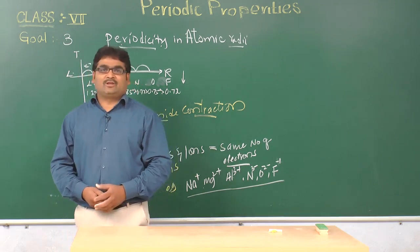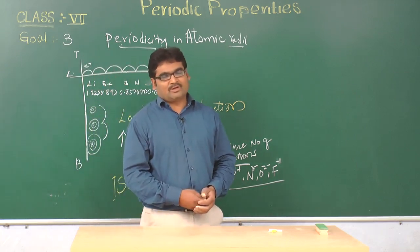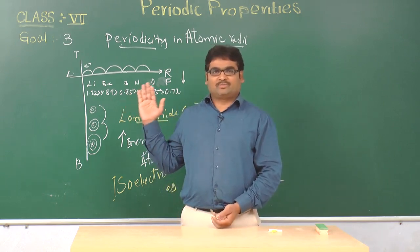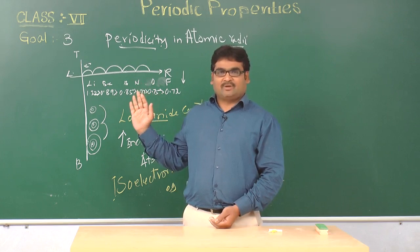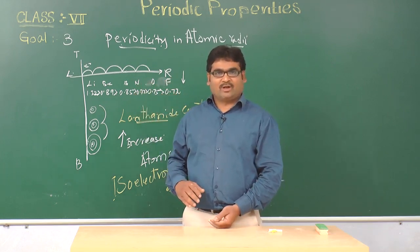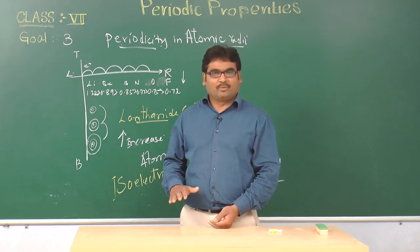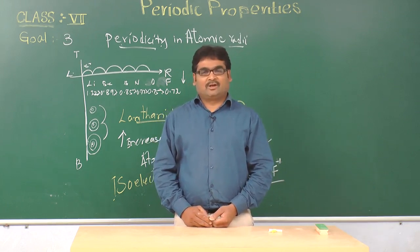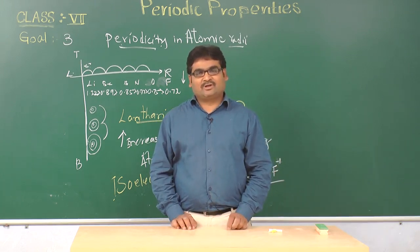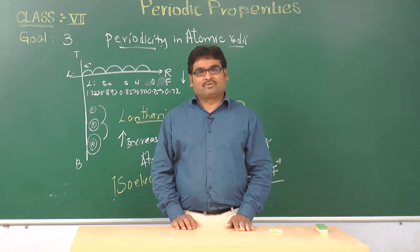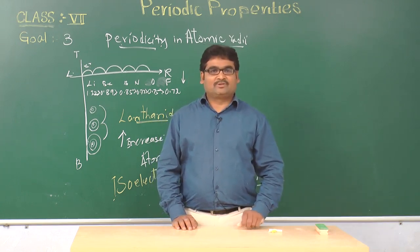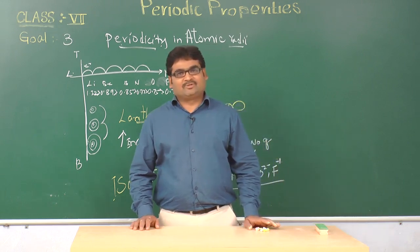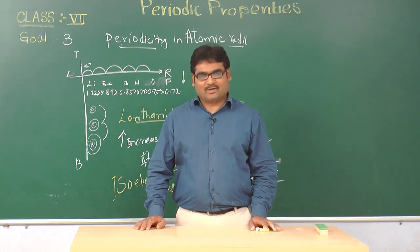So here we end with the first periodic property, that is the atomic radius. In summary, when we move across a period left to right, the atomic size decreases, whereas when we move top to bottom of a group, the atomic size increases. In the next class, we will see another property, that is the ionization energy or the ionization potential. Read well — reading leads to realities. Have a good time, thank you.